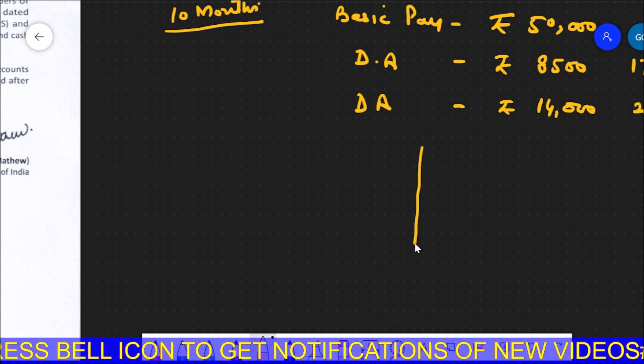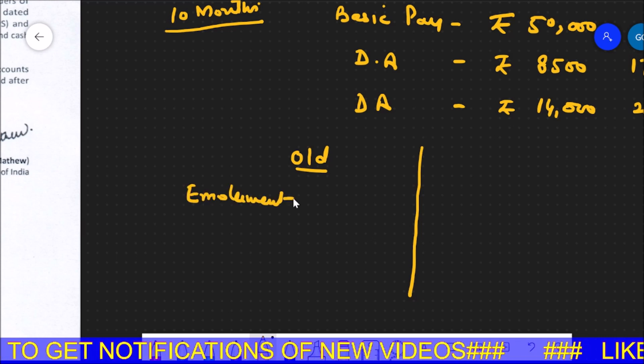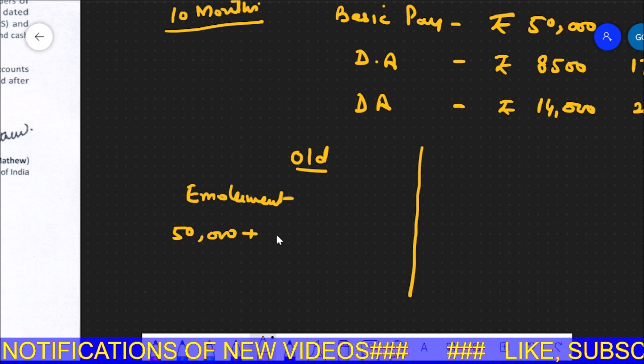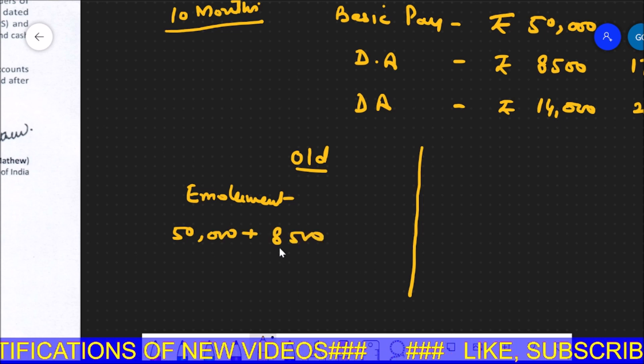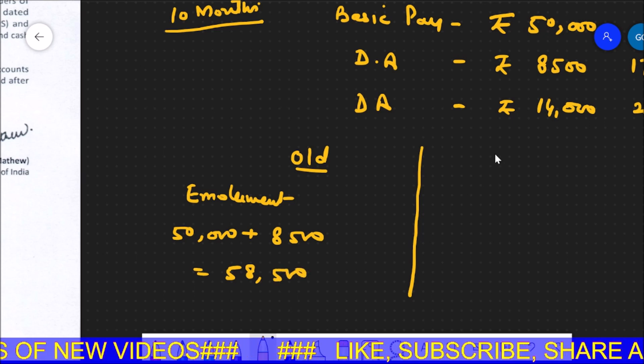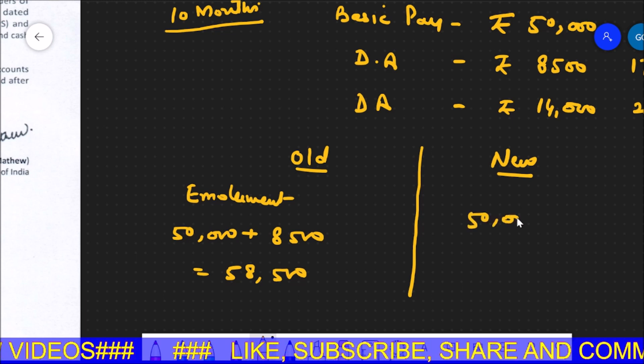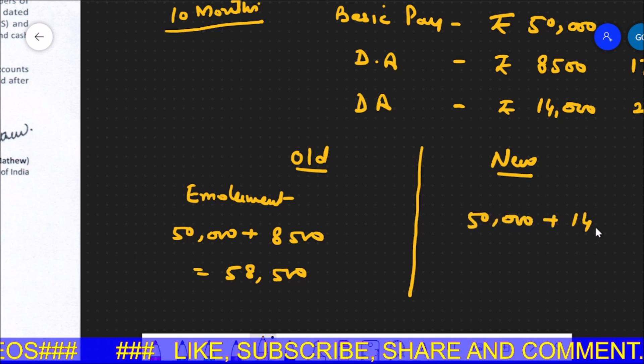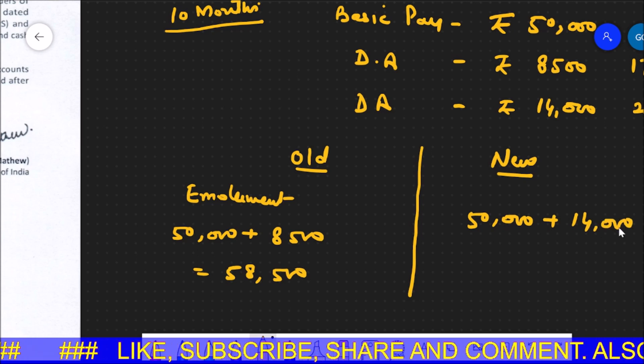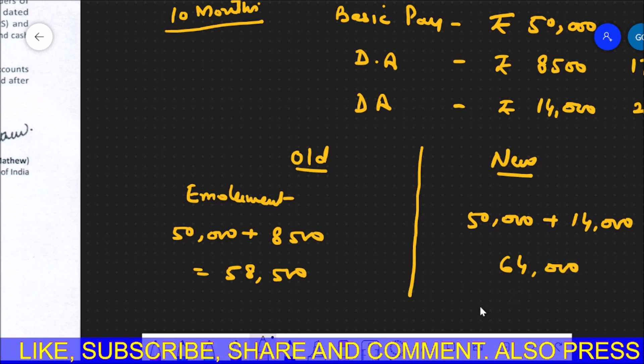So if we calculate the emoluments then, I will make old and new. The old emoluments is Rs. 50,000 plus Rs. 8,500 which becomes Rs. 58,500. The new is Rs. 50,000 plus Rs. 14,000 which becomes Rs. 64,000.